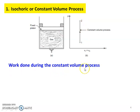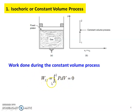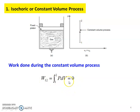Work done during the constant volume process: W12 = ∫P dV. Since there is no change in volume, DV equals 0, therefore W12 equals 0. Work done in the constant volume process is zero.